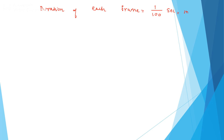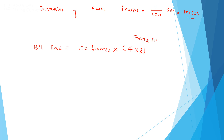Next we can compute the bit rate. We have 100 frames per second and each individual frame size is 4 × 8 = 32 bits. Therefore, bit rate is equal to 100 frames × 32 bits per frame = 3200 bits per second.